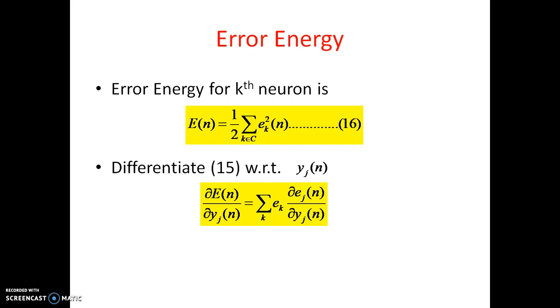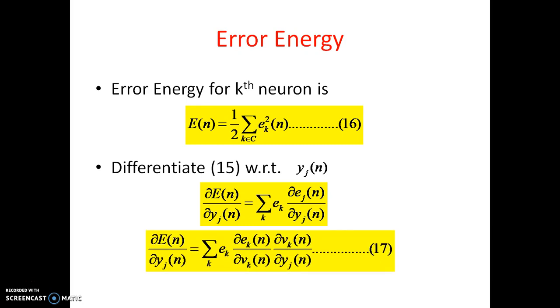Dou E of N by Yj of N is equal to sigma k E k dou Ek of N by dou Yj of N. So obviously we need to see what is dou Ek of N by dou Yj of N. This is the final equation dou E of N by dou Yj of N equal to sigma k E k dou E of N by dou Vk of N dou Vk of N by dou Yj of N. This is the final equation.